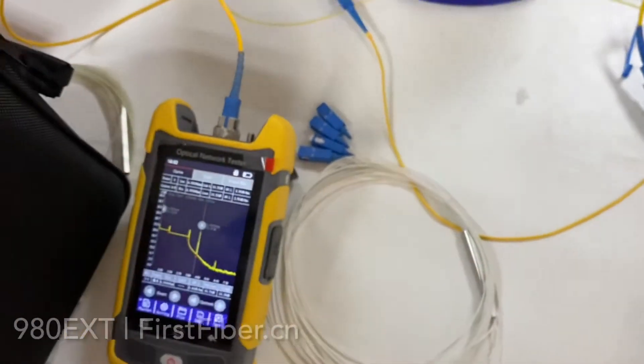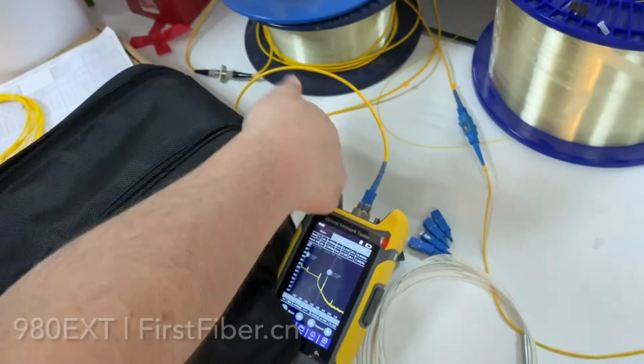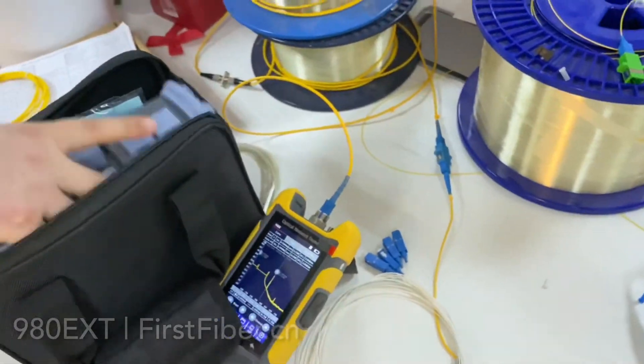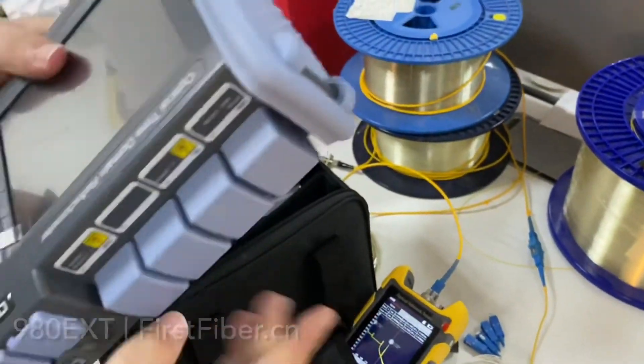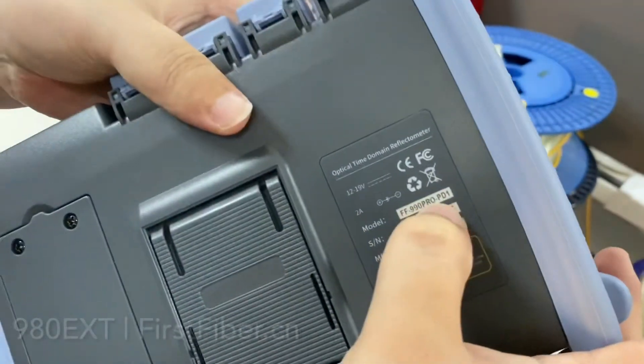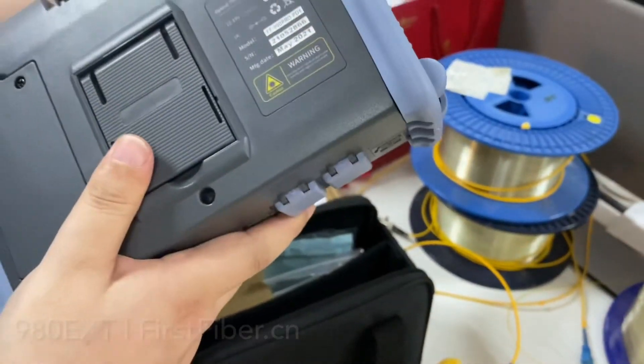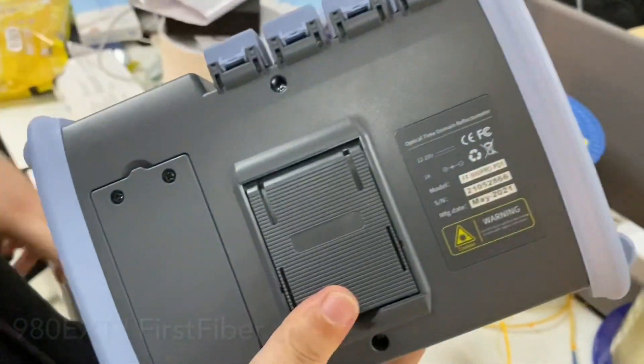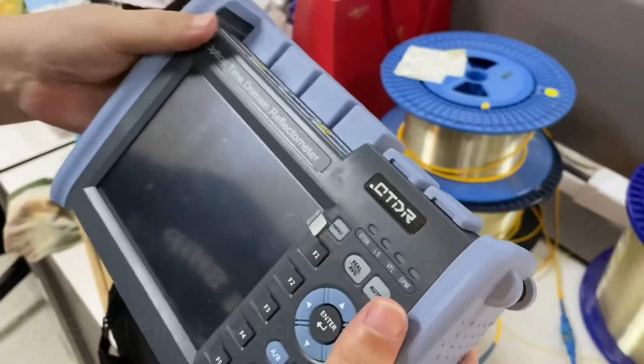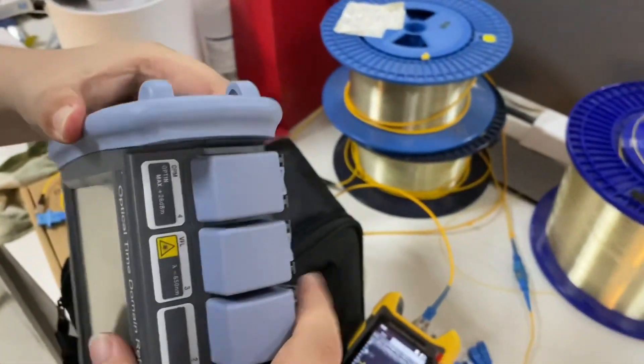This one. This is splitter OTDR. Model number is PD-1. It was optimized for splitter test. So, it is very professional for testing splitter. Thank you. Bye-bye.